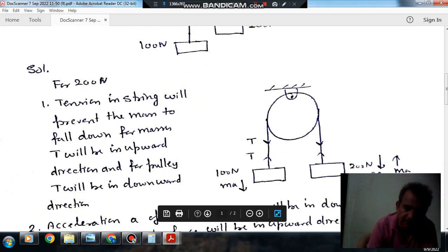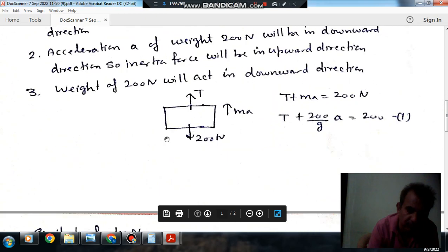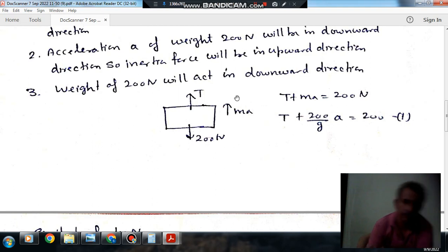Suppose A is the acceleration, then MA is the inertia force and T is the tension. The forces acting on the weight of 200N are: its weight 200N, T tension in upward direction, and MA is the inertia force.